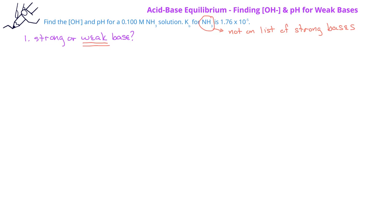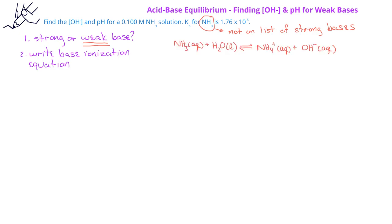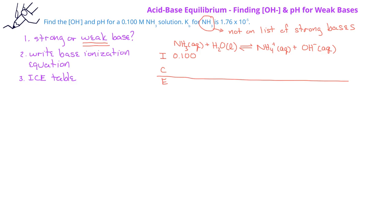Because it's a weak base, we'll need to write the base ionization equation. So we have NH3 aqueous plus H2O liquid in equilibrium with the ammonium ion in the aqueous phase and the hydroxide ion in the aqueous phase. We can now set up the ICE table. We have an initial concentration of ammonia of 0.100 molar, and initial concentrations of the ammonium ion and the hydroxide ion which are both equal to zero.